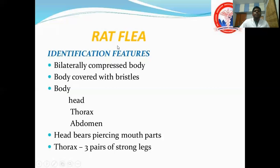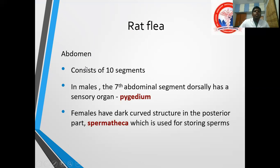For rat flea identification: they are bilaterally compressed with the body covered in bristles. They have head, thorax, and abdomen; piercing mouth parts; and three pairs of long legs. The abdomen has 10 segments. In the male, the seventh abdominal segment has a sensory organ called the pygidium. In the female, there is a spermathecum — a dark curved spot used to store sperms.